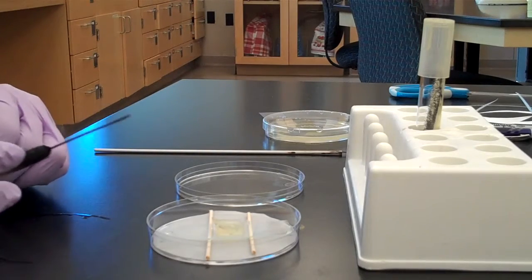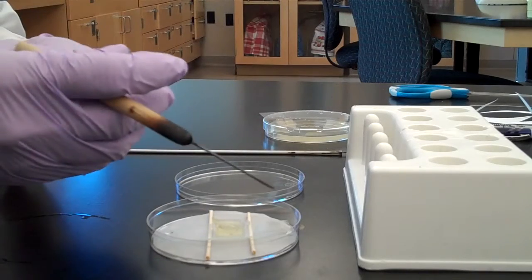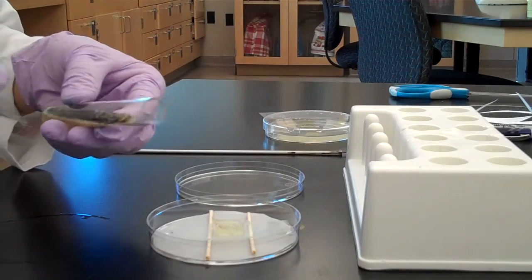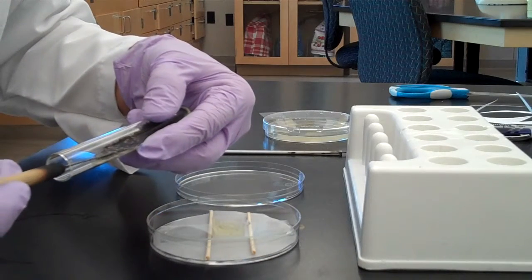Using a sterilized dissecting needle, pick up some spores by scraping the needle just inside the outer edge of the mold colony.